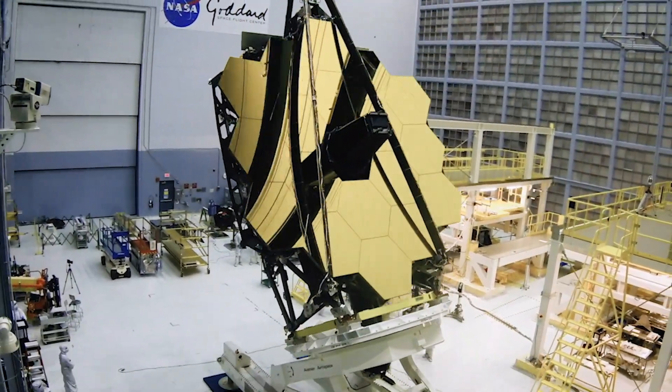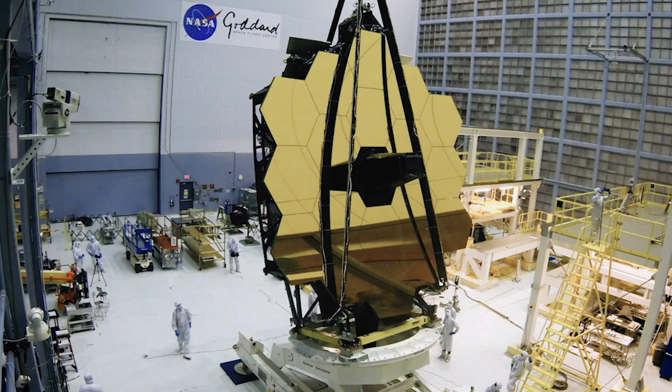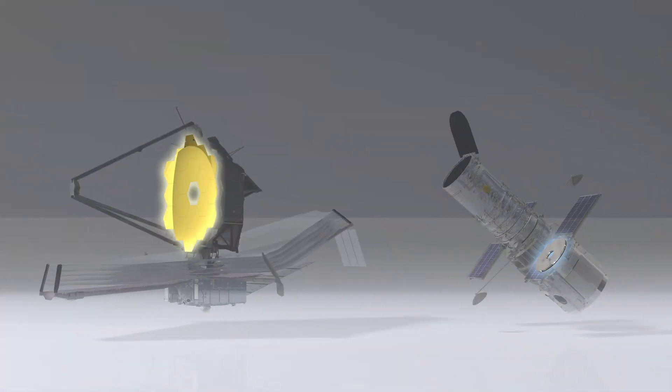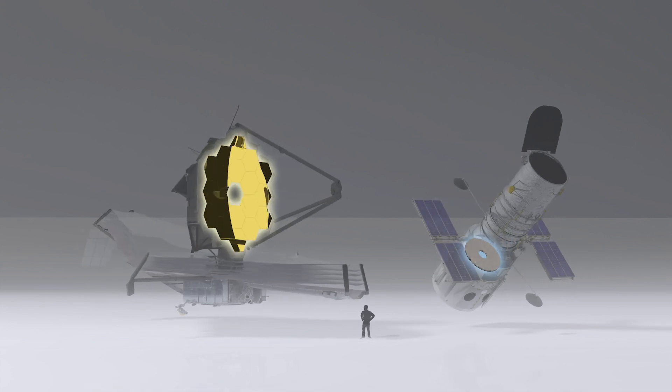Equipped with the largest primary mirror ever to be flown in space at six and a half meters, it's more than six times the size of the Hubble Space Telescope primary mirror.